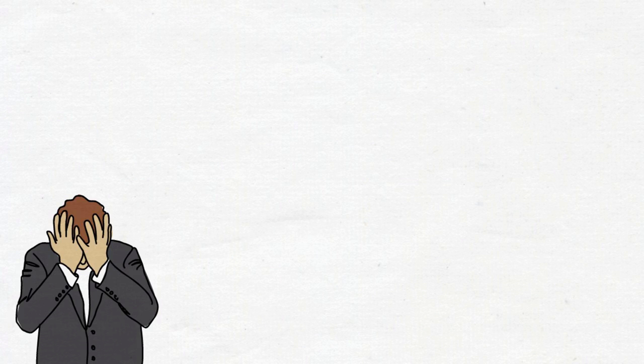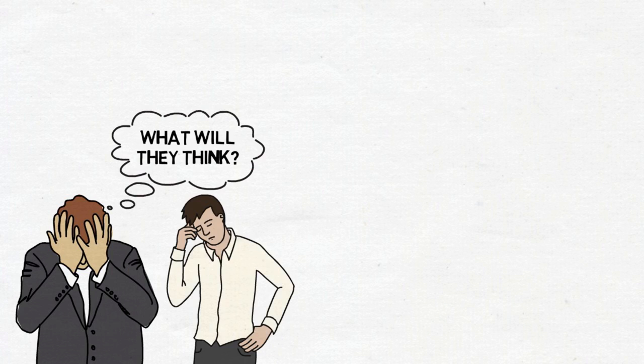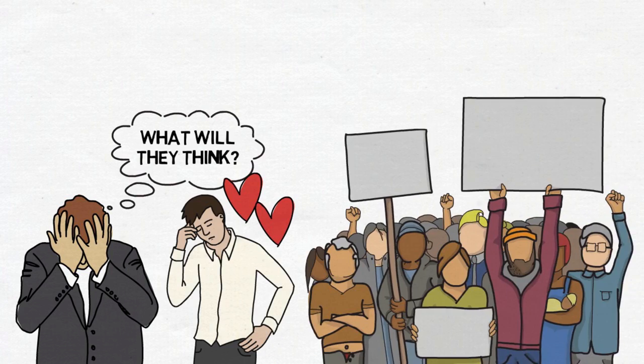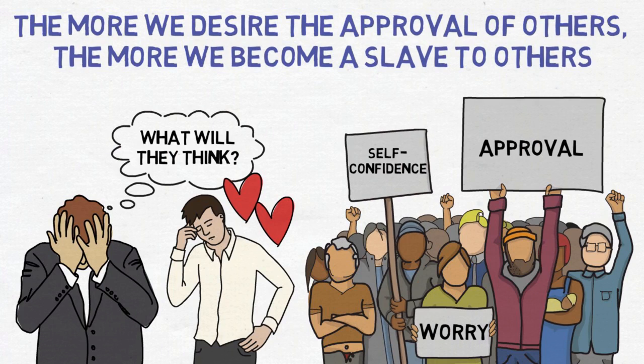Let's look at this example, take worry over losing your job. Often because of the world we live in, you will be more worried about what other people like your friends and family might think of you, rather than concentrating on the ways you could improve your circumstances. This is because of our innate desire to be liked by everyone, so we constantly seek for their approval without realizing how much this people-pleasing attitude sabotages our self-confidence and contributes to our worries. The more we desire the approval of others, the more we become a slave to others.